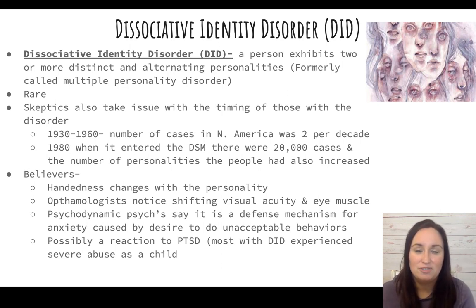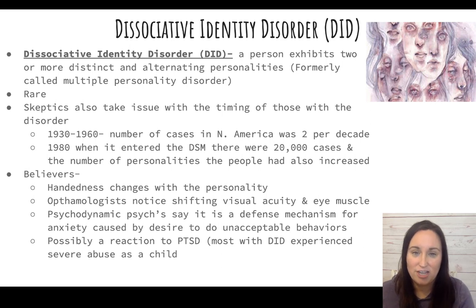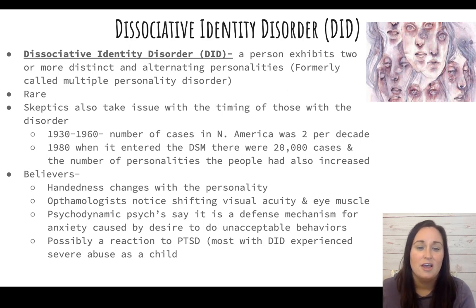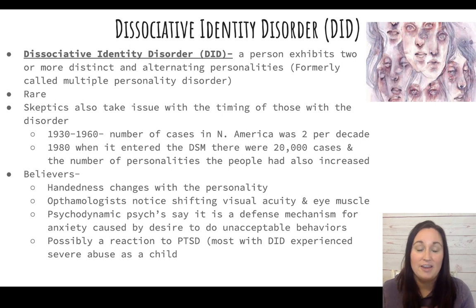Those who believe DID is real say you can see different brain patterns, handedness can change between personalities, and ophthalmologists notice differences in eye movement and vision. Psychodynamic psychologists believe it may be a defense mechanism for anxiety, where the alternate personality acts out things the conscious mind finds unacceptable.